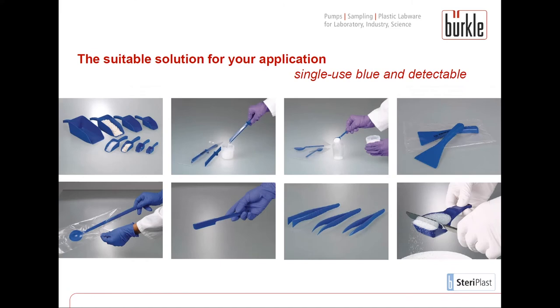The same applies to palette knife spatulas, and measuring spoons available in 8 sizes made of stainless steel or as single-use plastic alternatives, and forceps in different sizes and shapes. All small single-use items are also offered in blue and blue detectable versions, which is especially demanded by the food and beverage industry.